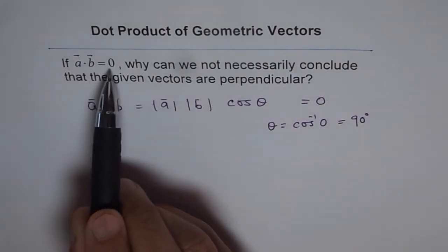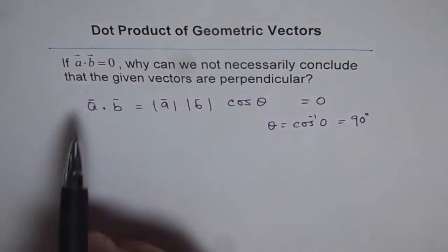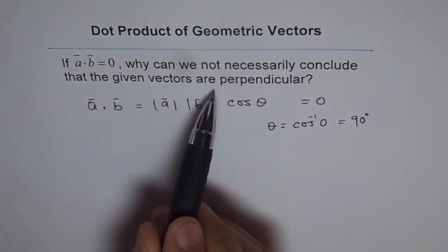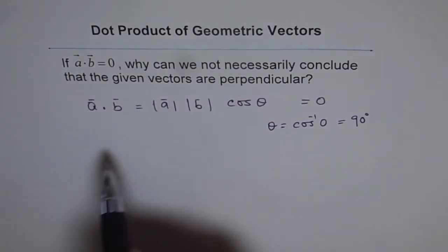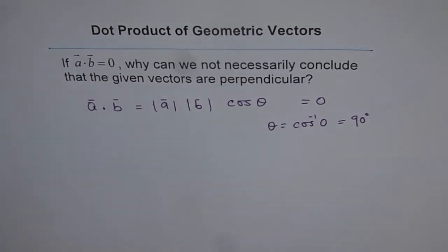If A dot B equals to 0, why can we not necessarily conclude that the given vectors are perpendicular? Because if you see it logically, it seems this is possible. It is true. If theta is 0, you will get 0. But there could be other conditions.